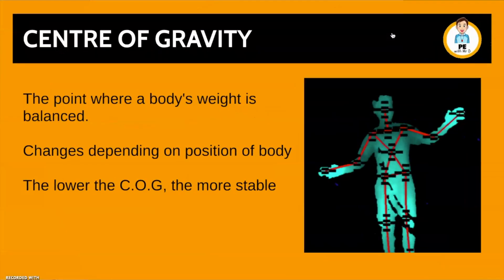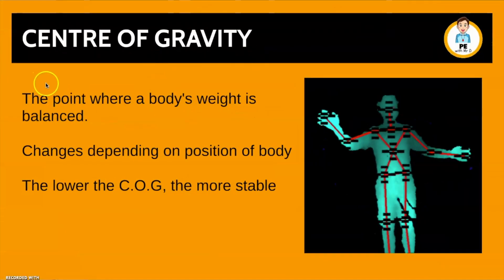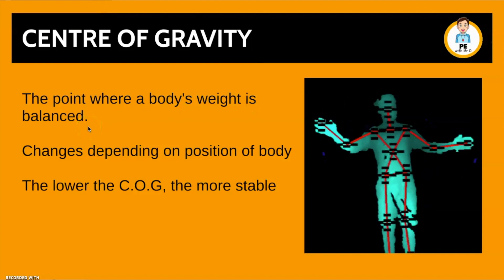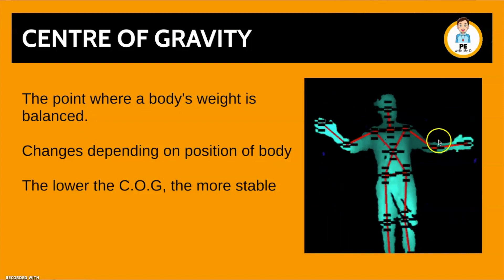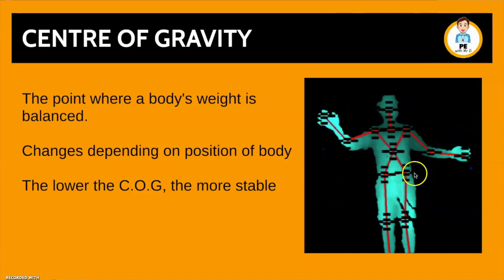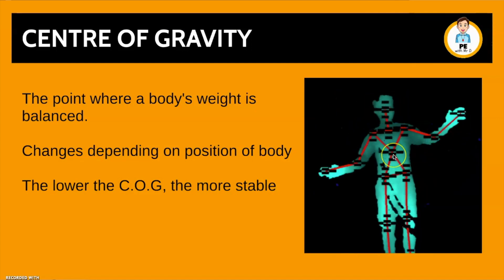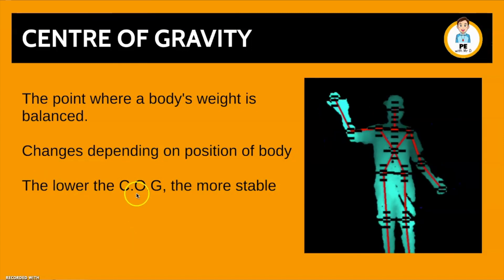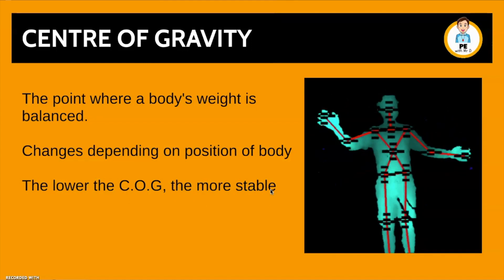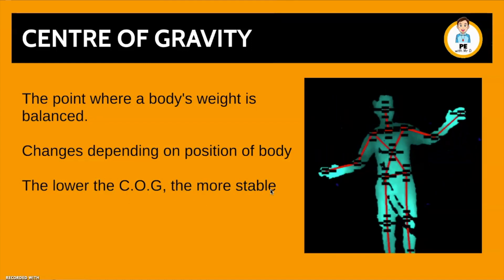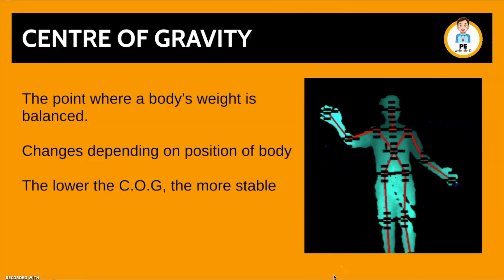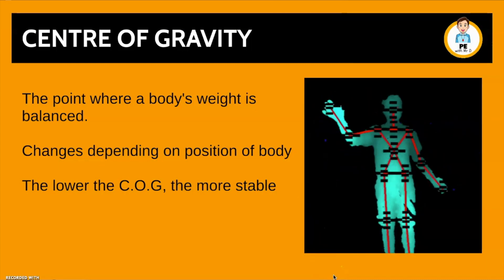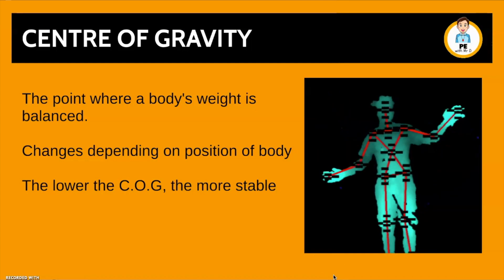Let's have a look at the centre of gravity. This is the point where the body's weight is balanced. This changes depending on the position of the body. As we can see here, the centre of gravity will be somewhere where these red lines intersect in the middle. A key point: the lower the centre of gravity, the more stable somebody or something is. This is why you see rugby players squatting and getting low to the ground when they make a tackle or enter a scrum — so they are more balanced, have more equilibrium, and are able to deliver force without falling over.